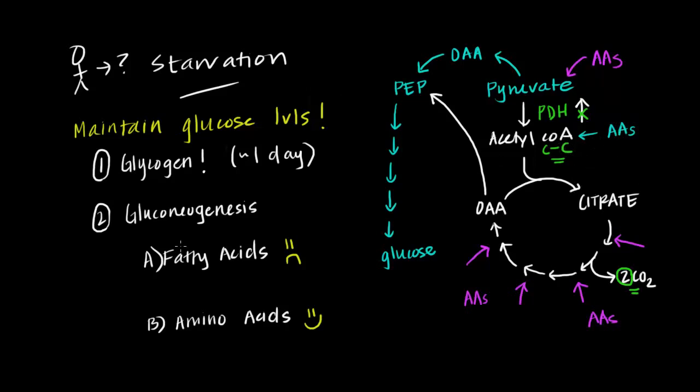Alright, so this seems all fine and good. We have a solution, right? We're able to use amino acids to eventually produce glucose through gluconeogenesis. But what might be a potential pitfall of using amino acids?